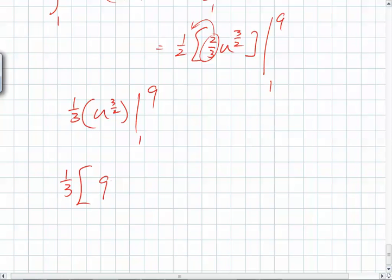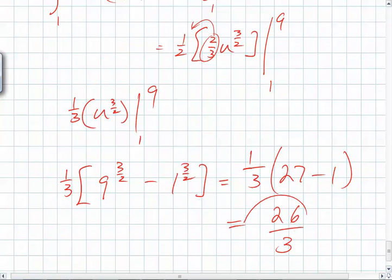So what is this? 1 third times 9 to the 3 halves minus 1 to the 3 halves. What's the square root of 9? What's 3 cubed? So it's 27 minus 1, so what's the answer? 26 over 3.